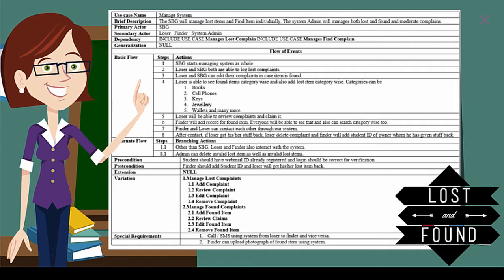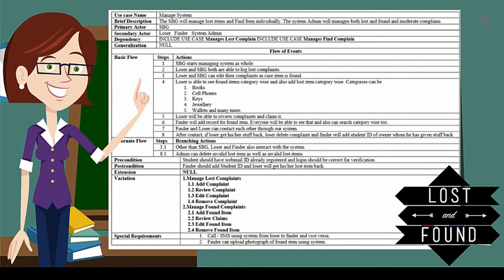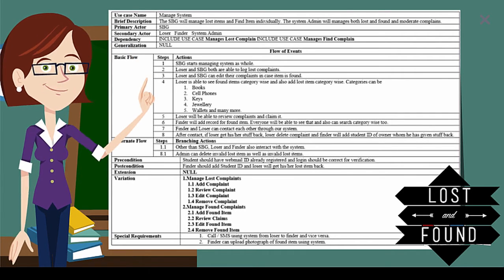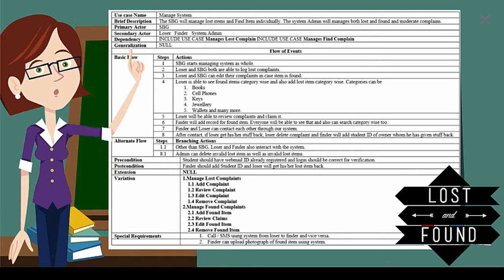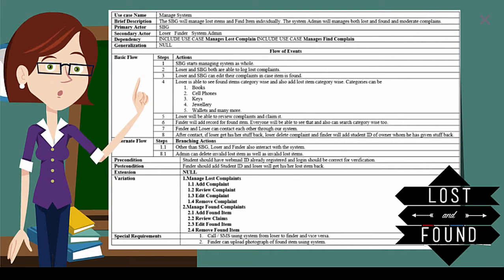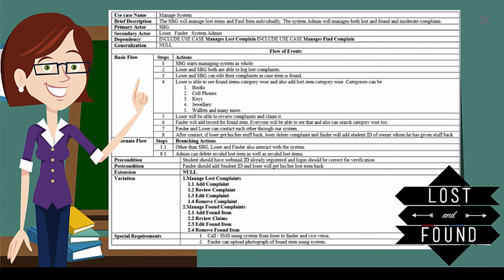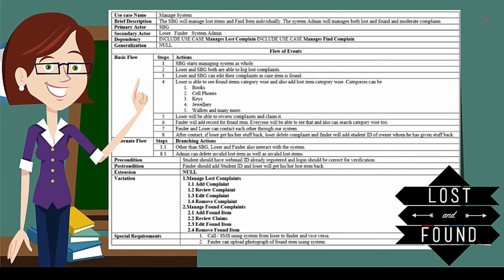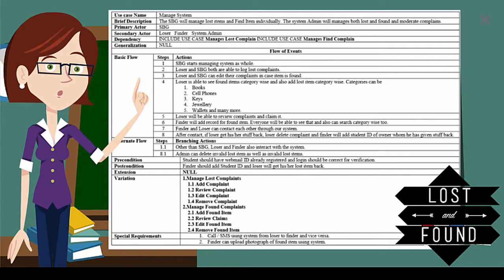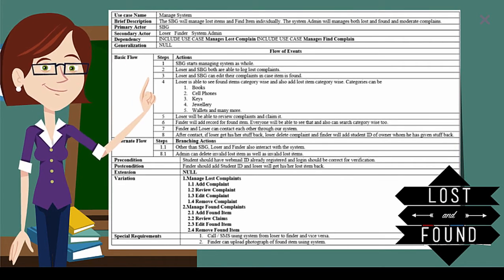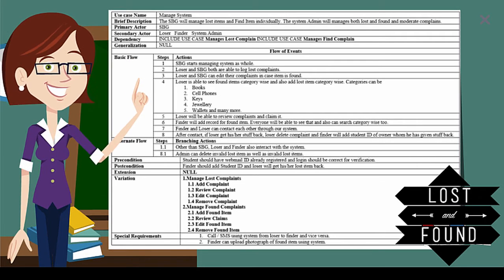Special requirements are extra or additional functionalities in our system. First is call or SMS using the system from loser to finder and vice versa — our system allows you to directly call or SMS a person about a lost or found item. Second, the finder can upload a photograph of the found item using our system, making it easier for the loser to identify it. That covers the complete use case description.